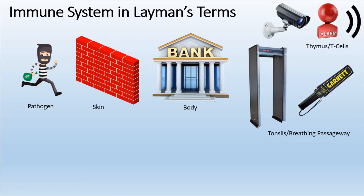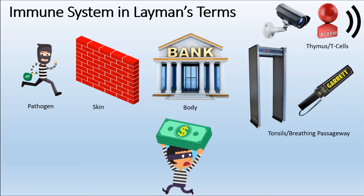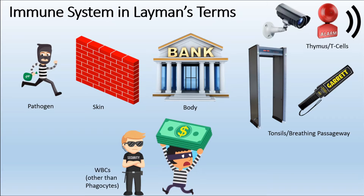When the alarm is sounded and the robber starts creating problems for the hostages, different persons come to stop him. The security guard approaches to neutralize the robber, which we can compare to the WBCs present within our body. The silent or normal alarm also alerts the local department.